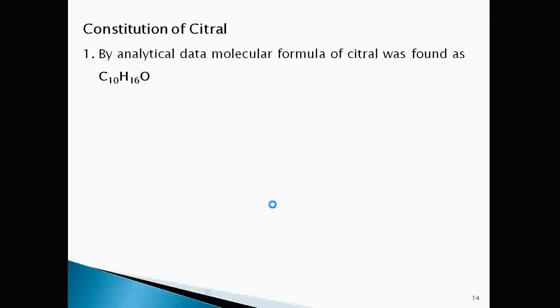To write the structure of any compound, first requirement is its molecular formula. By analytical data that is by empirical formula determination and molecular mass determination, molecular formula of citral was found as C10H16O.